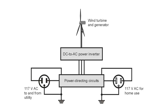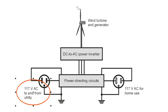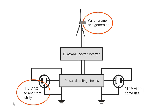But this particular type of system — the grid intertie, the simplest type — basically your wind and your utility combine to provide you with your electricity. More wind, you use less utility power. Less wind, you use more utility power.